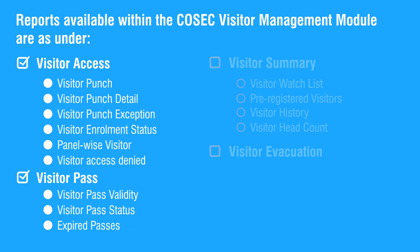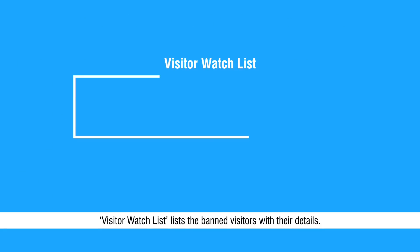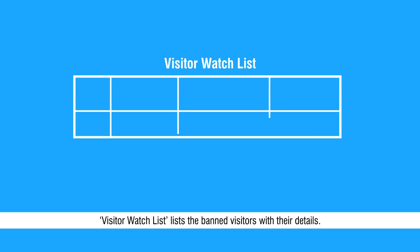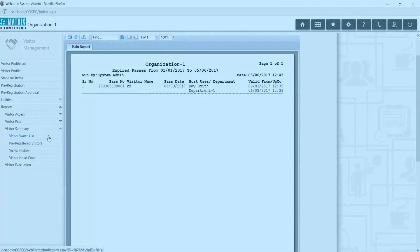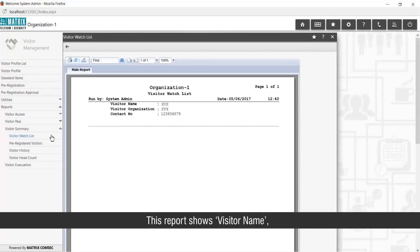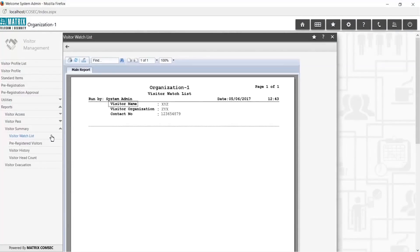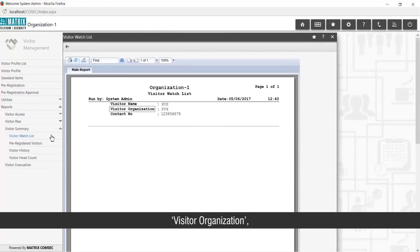This completes visitor pass based reports. Let us start with visitor summary reports. Visitor Watch List lists the banned visitors with their details. This report shows Visitor Name, Visitor Organization, and Contact Number.